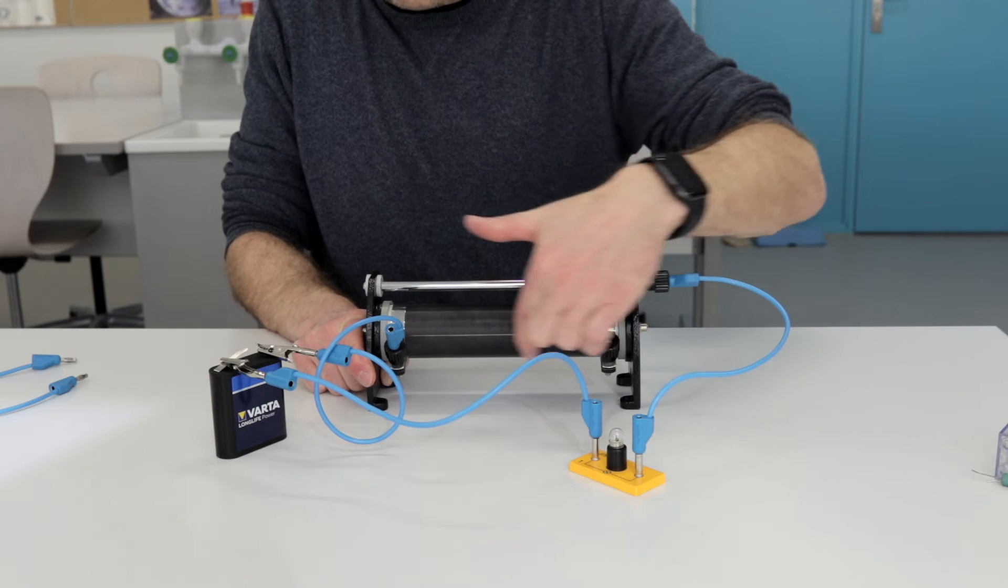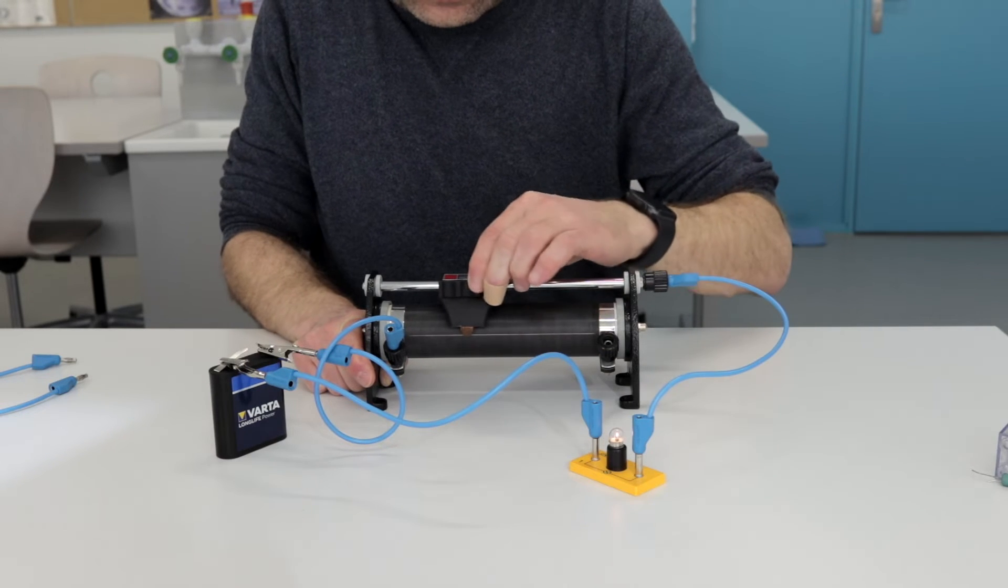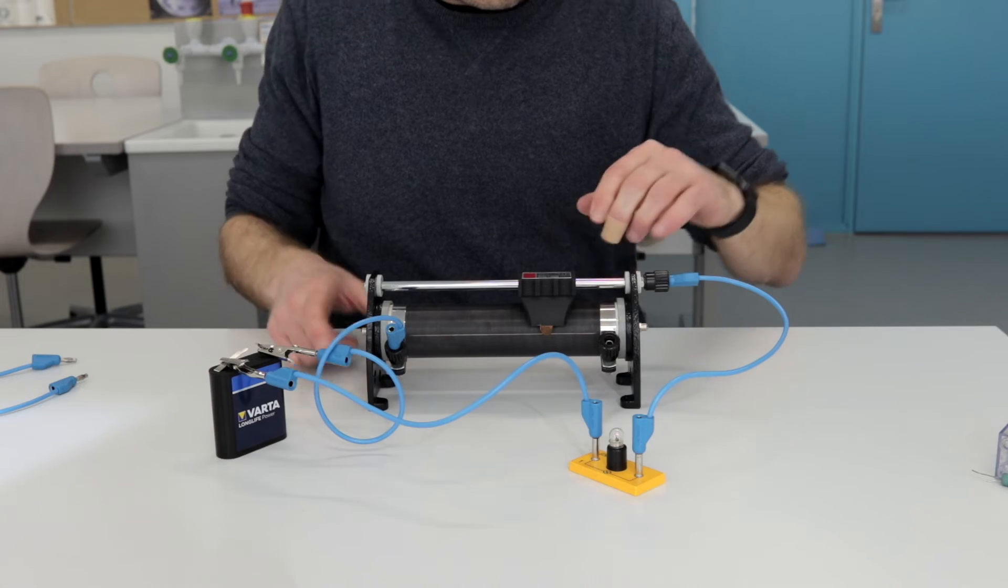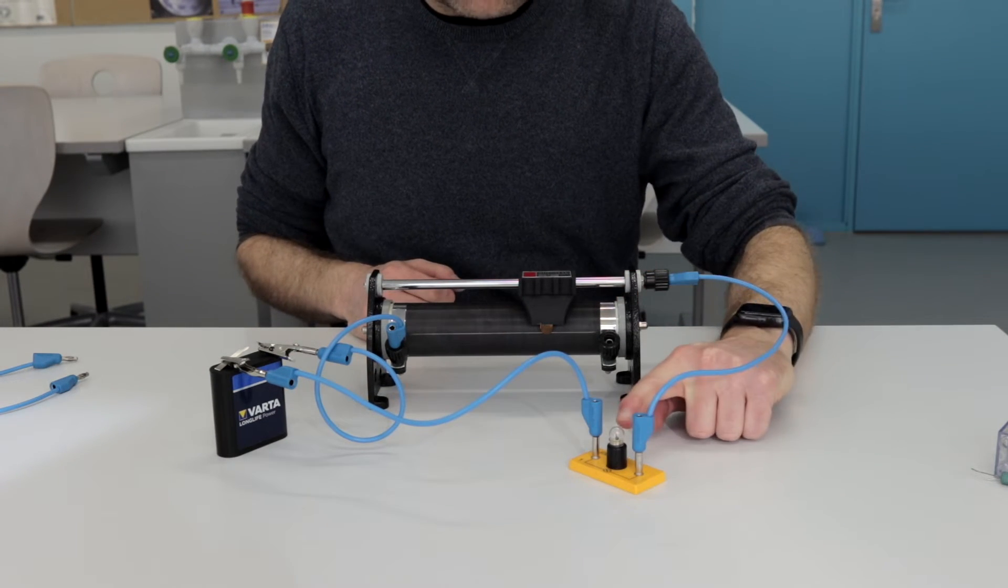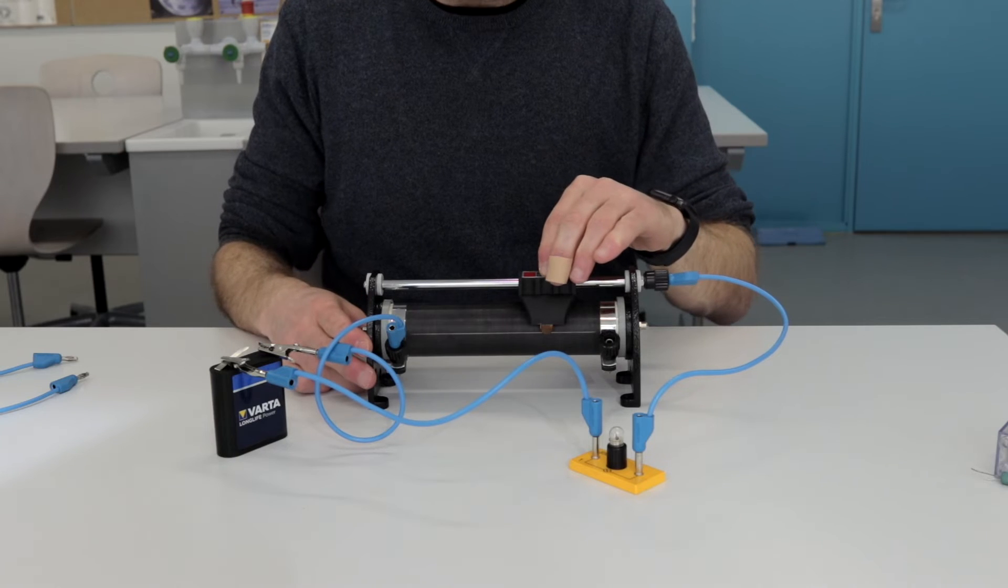So now, this section of the coil is in the circuit. As I put a longer coil in the circuit, a longer wire, the total resistance increases, and that is reflected in a dimmer light bulb.